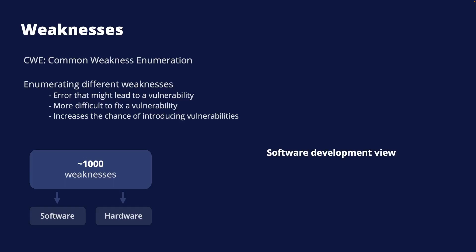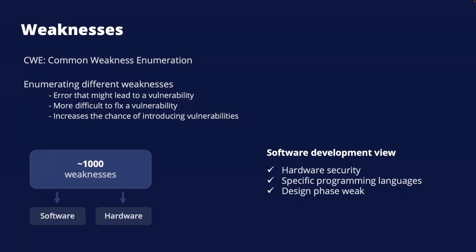We will use the software development view in our description. This view organizes weaknesses by development-related concepts. There are also, for example, views for hardware security, for specific programming languages, for weaknesses introduced during the design phase, for weaknesses introduced during the implementation phase, and for mobile applications and more.